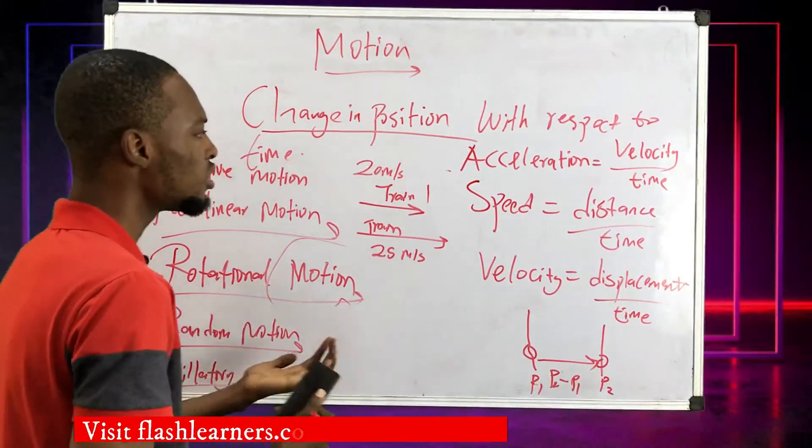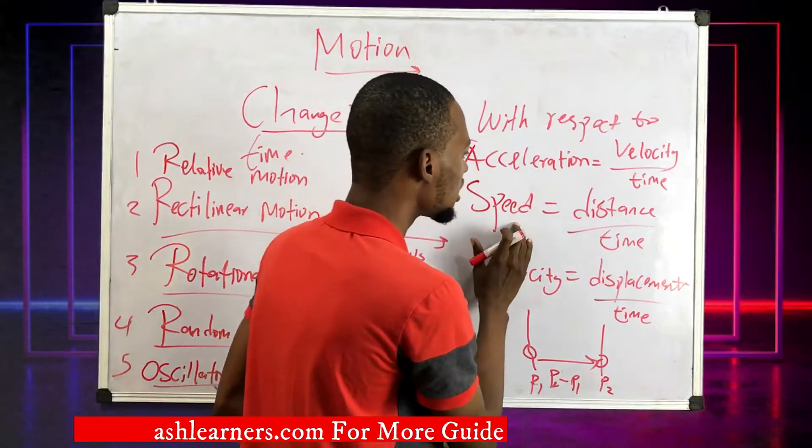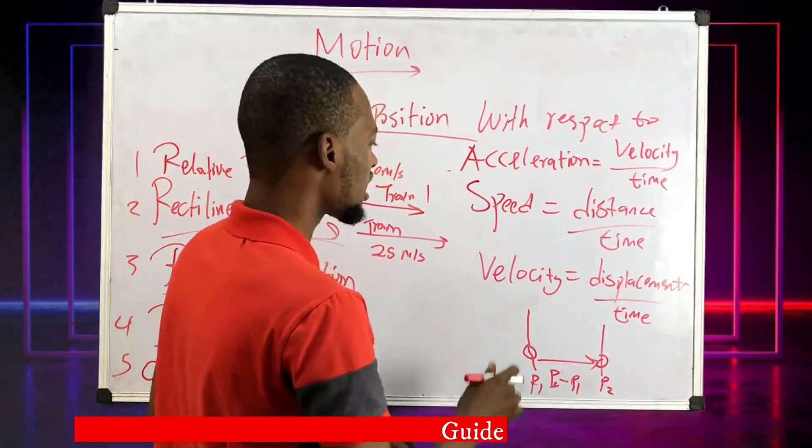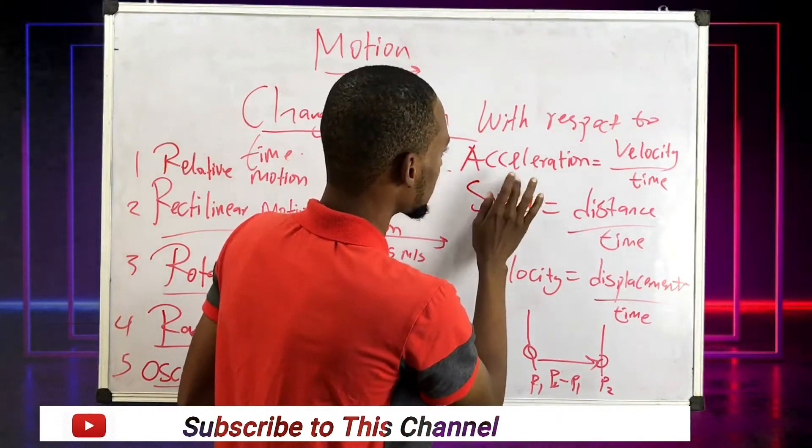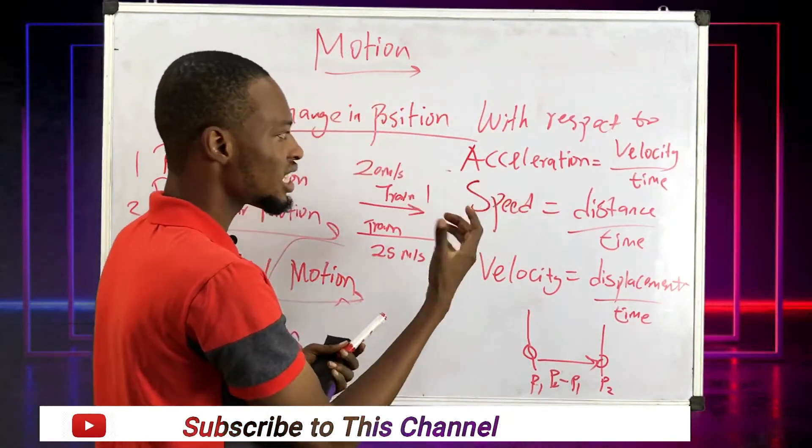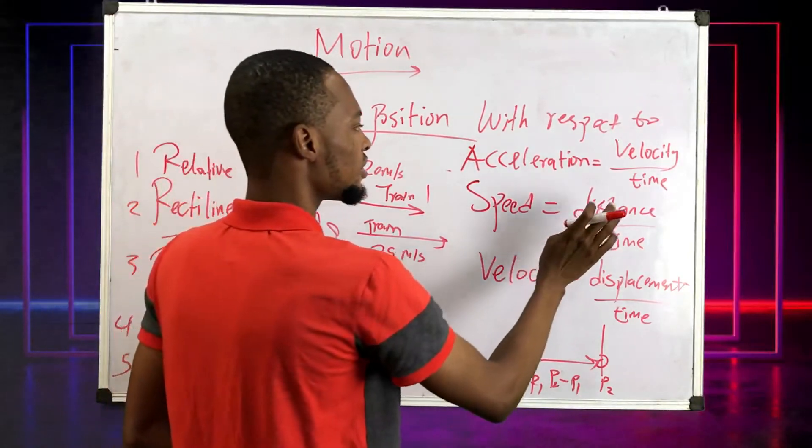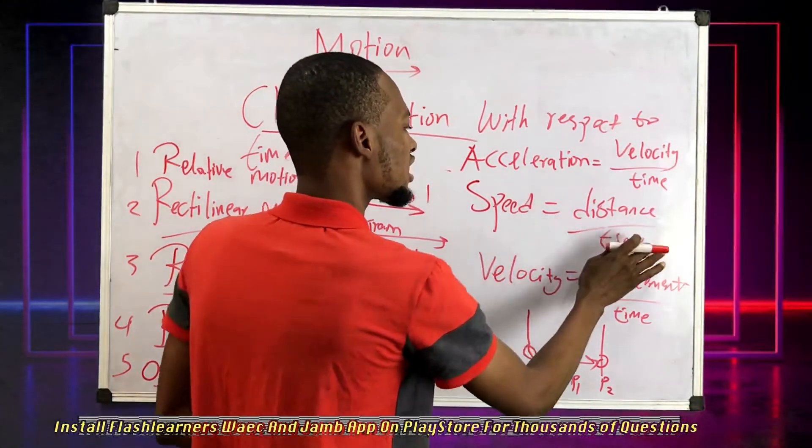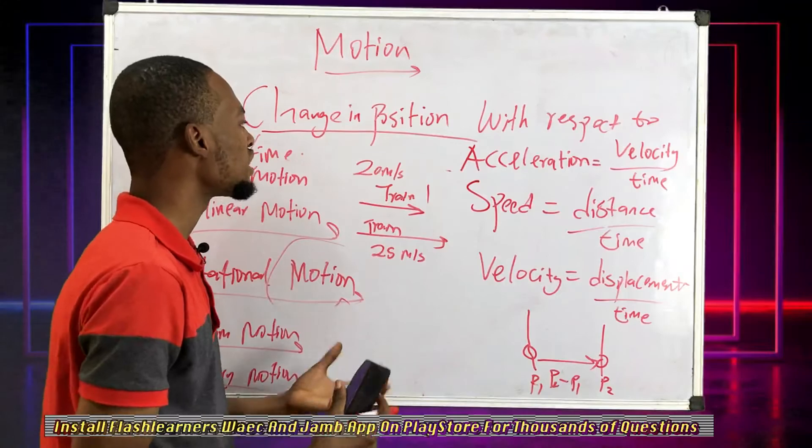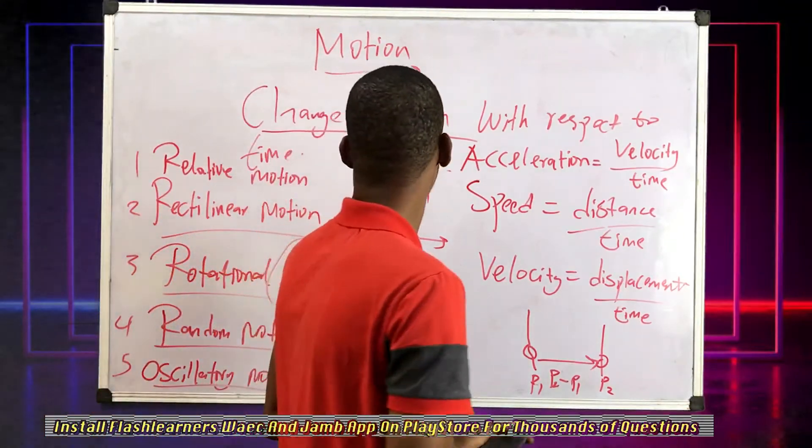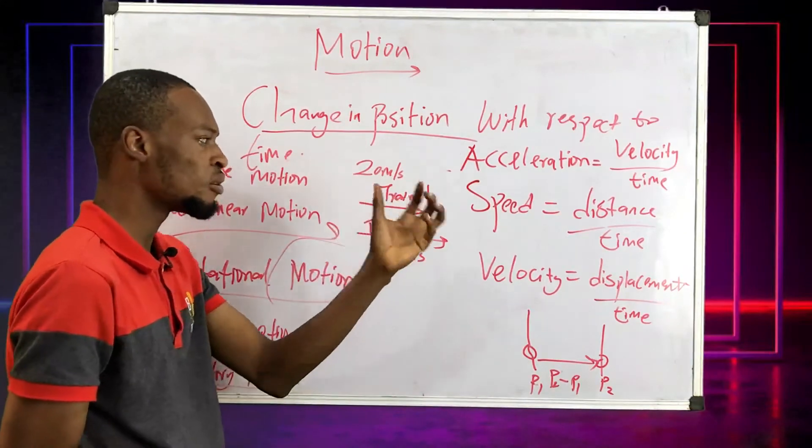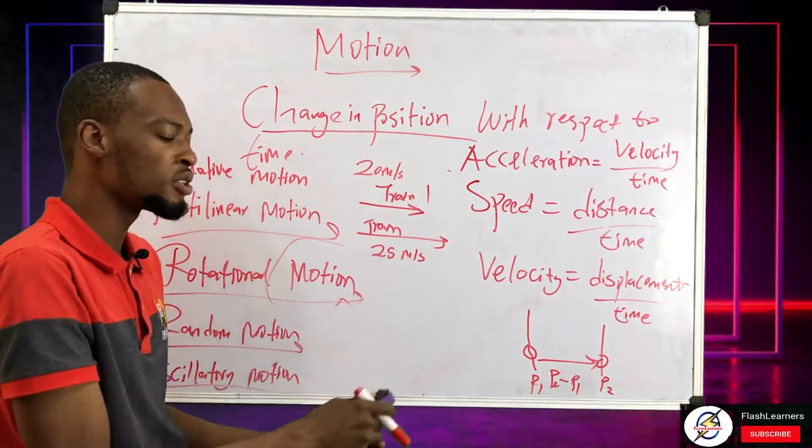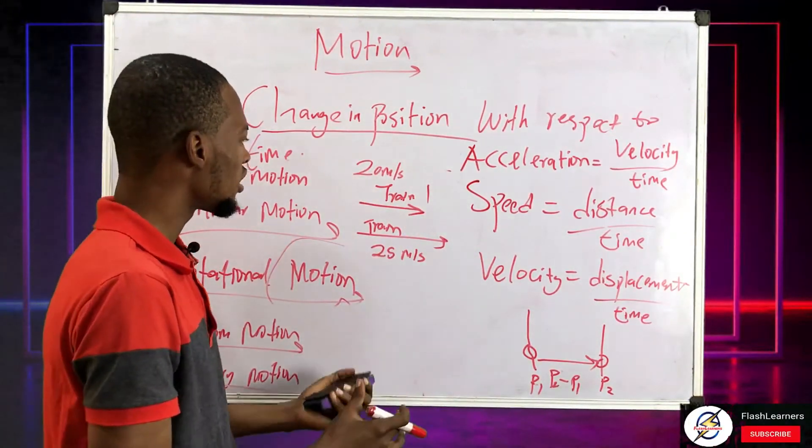Motion is changing position of a body with respect to time. Speed is change in distance over time and speed is a scalar quantity. Velocity and acceleration are derived quantities. Distance and time are basic quantities. I've explained all this before. In the future we'll be doing calculations under motion, Newton's laws of motion, and other stuff.